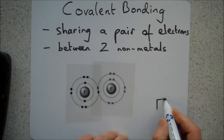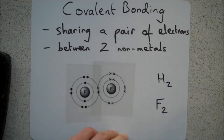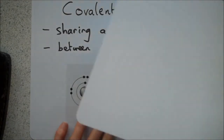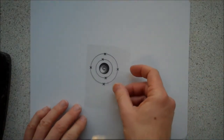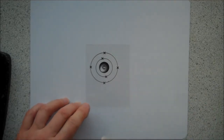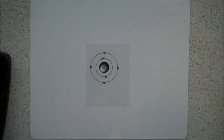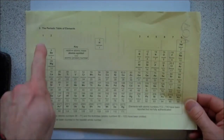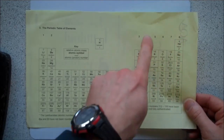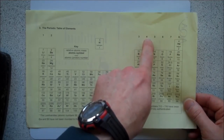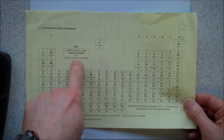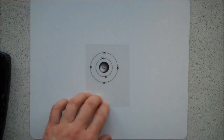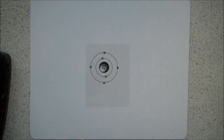So nonmetals can achieve a full outer shell by sharing a pair of electrons. Like hydrogen, fluorine goes around in a pair: hydrogen H2, fluorine F2. Now let's look at a slightly more complicated molecule — methane, the simplest hydrocarbon, with one carbon. Carbon has four electrons in its outer shell. In an exam you can check this quickly: carbon is in group four, so the four tells you it has four outer electrons. Carbon's atomic number is six — six protons, six electrons — two in the first shell, four in the second.